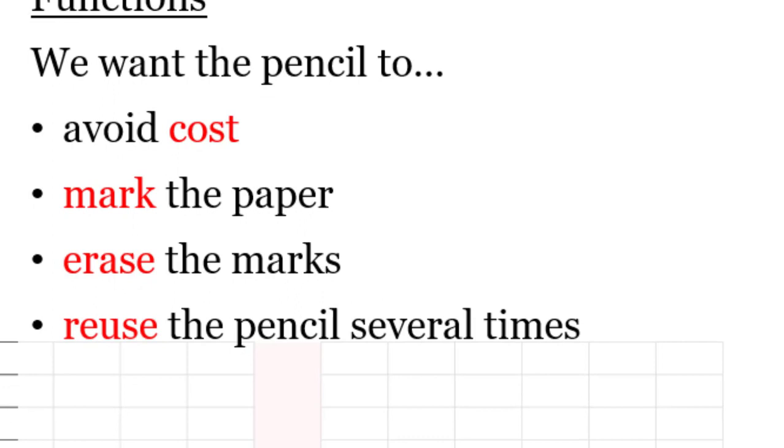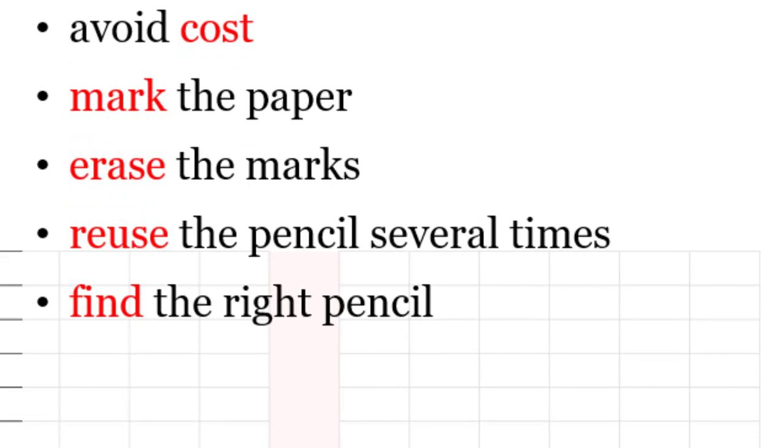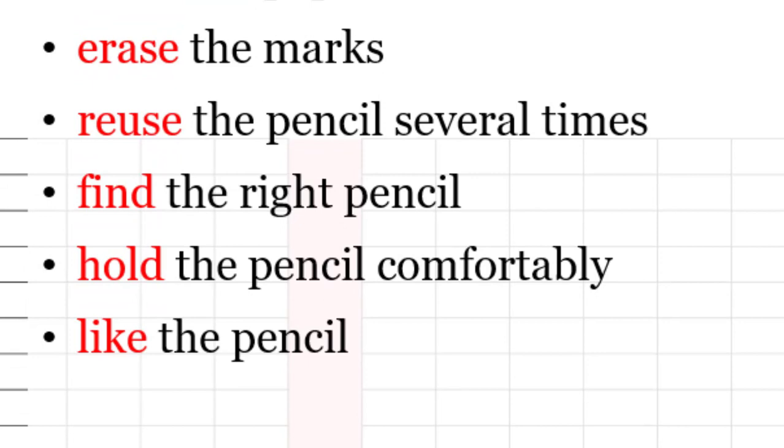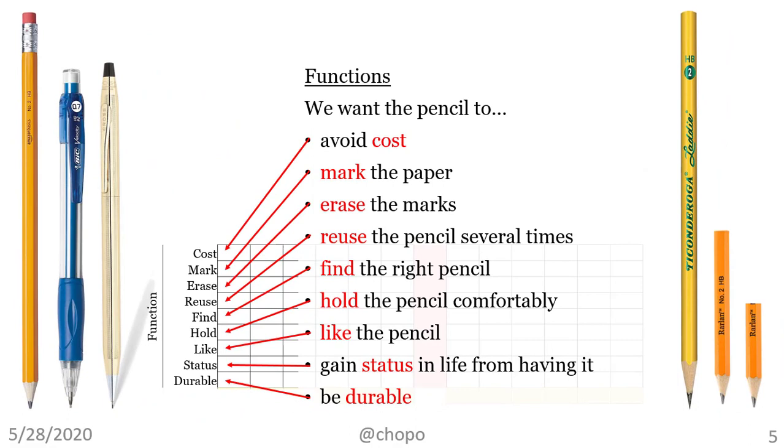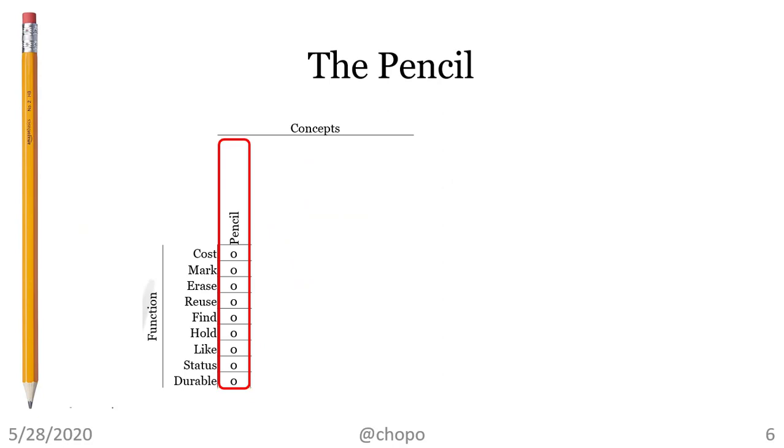We want to reuse the pencil several times. If we had coloring pencils, we would want to find the right pencil. We want to hold the pencil comfortably. Perhaps we want to like the pencil. Some people may want to gain status in life from having a fancy pencil. And we want the pencil to be durable. So, write the functions on the first column of the matrix.